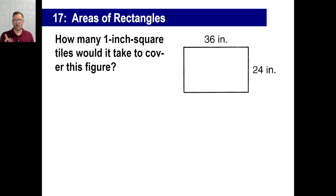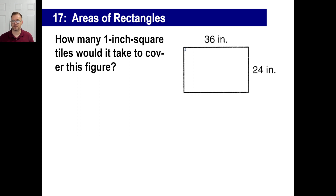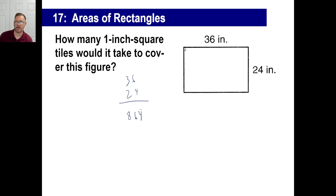How many one-inch square tiles would it take to cover this figure? Since you're looking at one-inch squares, not feet anymore, the one-inch squares are going to look really small. If there are 36 in one length, there are going to be 36 tiles going all the way across to the very end. But there aren't just 36 — there are 24 rows of those things. So you take 36 and multiply by 24, and you get 864. That's how many one-inch square tiles would it take to cover that entire thing.